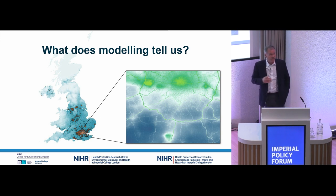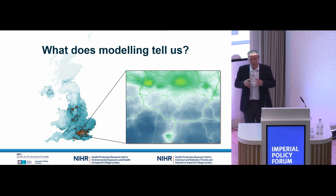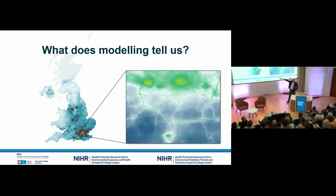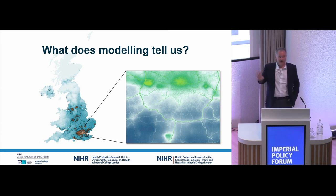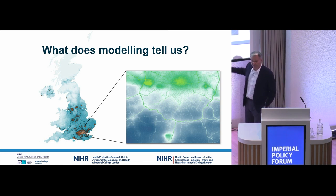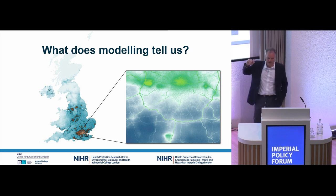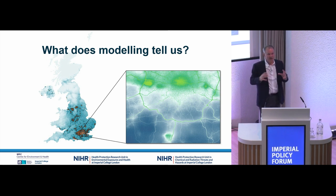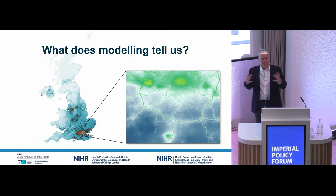Now let's consider what modelling tells us. Modelling is great because I can measure a couple of locations in great detail, but modelling allows me to understand the heterogeneity in space. We have a PM2.5 map of the UK where the red areas show where PM2.5 is at its highest — there's a great deal of heterogeneity across the UK, highest in cities and in the southeast. Focusing in on London with a 20-metre NOx map of south London, you can see enormous heterogeneity even within a city. This tells us we can't just measure at one location — we have to understand the sources and the processes and extrapolate them to many places.